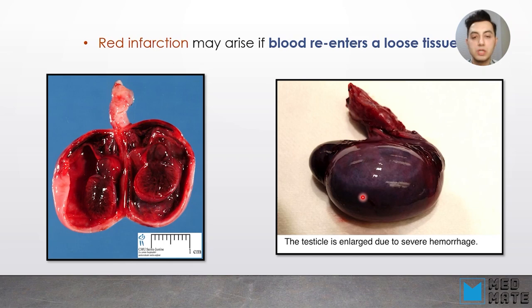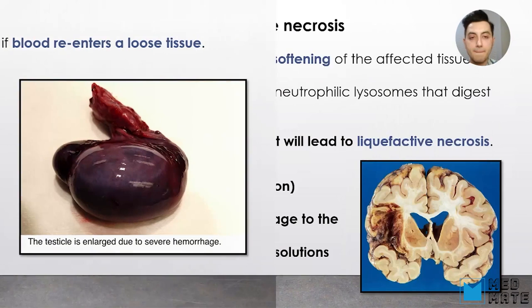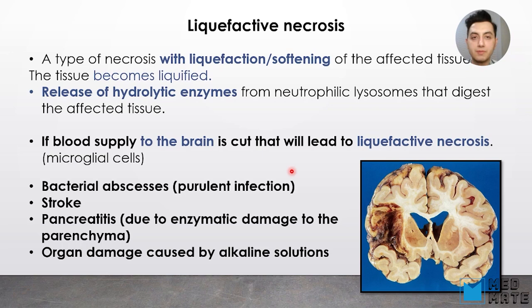We also have red infarction, which may arise if blood re-enters a loose tissue. Here you can see testicular torsion after reperfusion — the testicles are enlarged due to severe hemorrhages.